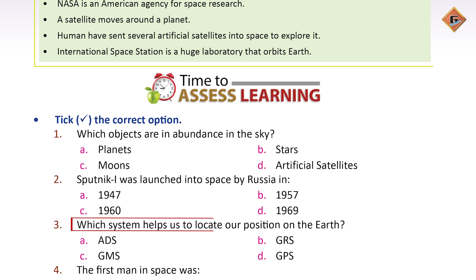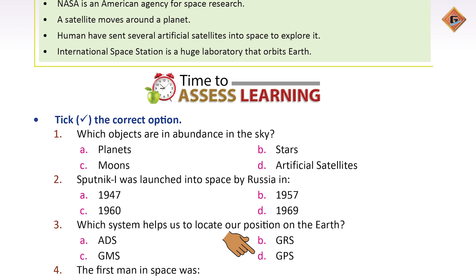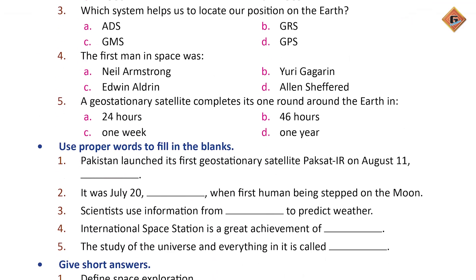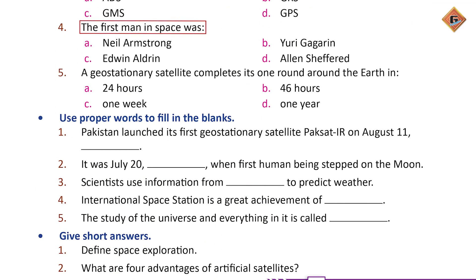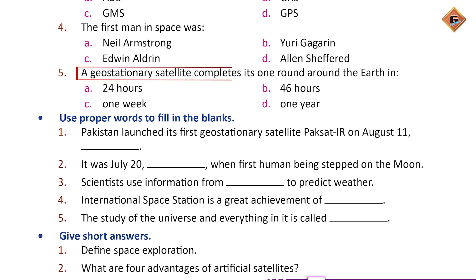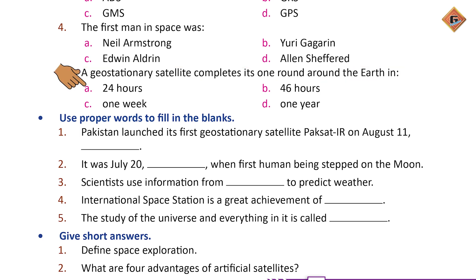Which system helps us to locate or find our position on the Earth? It is GPS — Global Positioning System. The first man in space was Yuri Gagarin. A geostationary satellite completes one round around the Earth in 24 hours. Now, fill in the blanks.